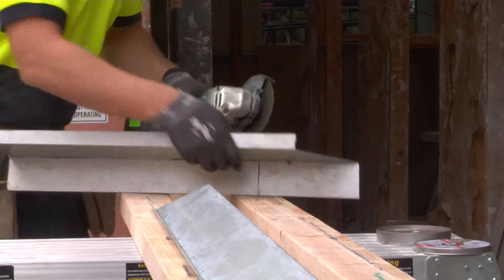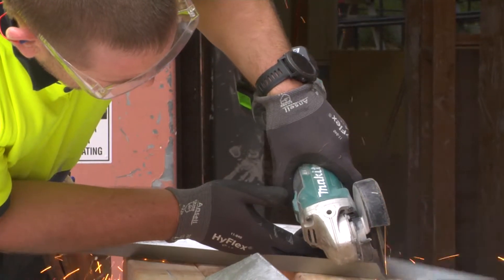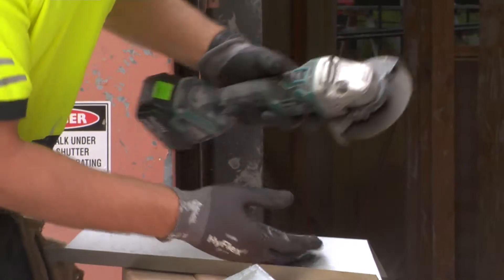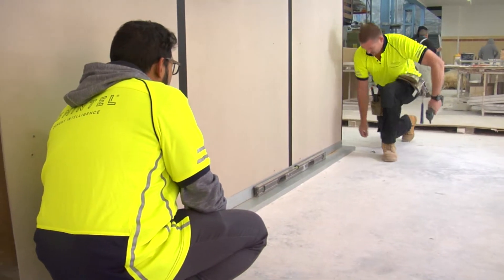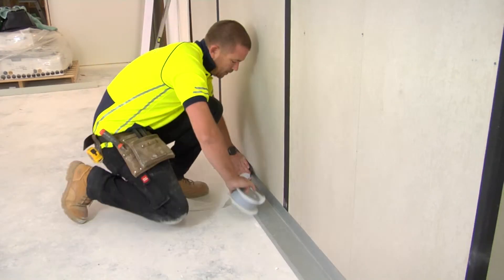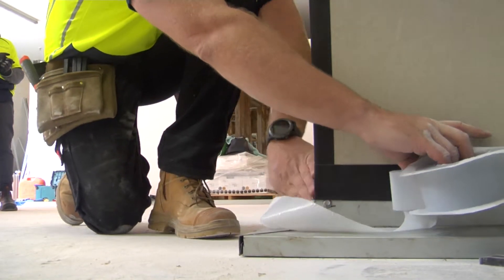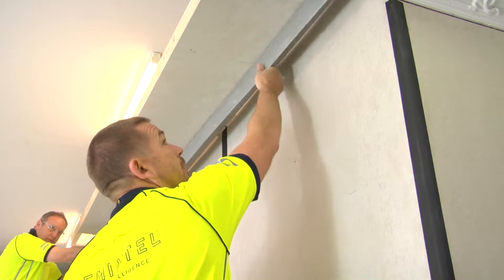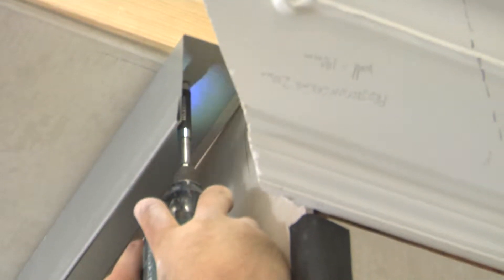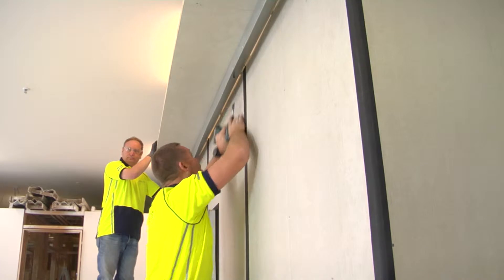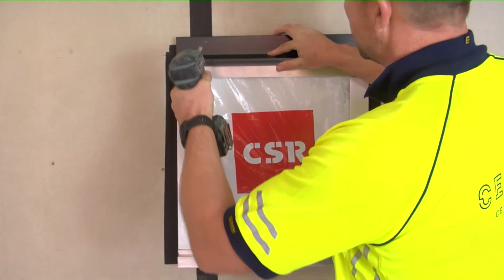Then install flashings to base and head, including installation of metal angle to soffit and windows, as per manufacturer's instructions.